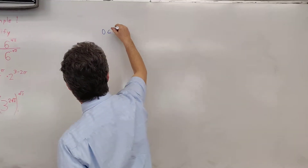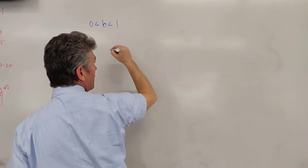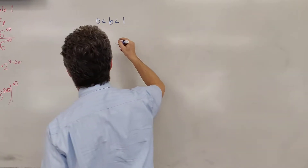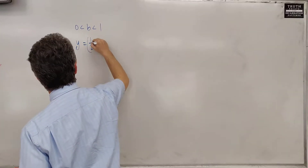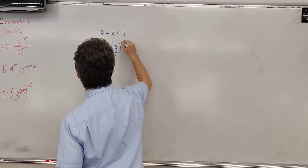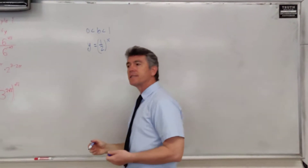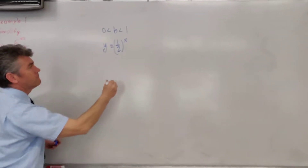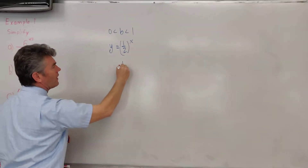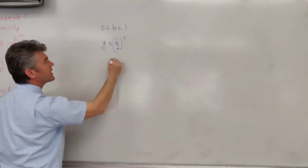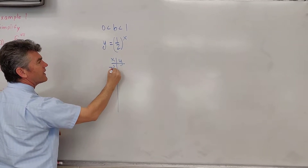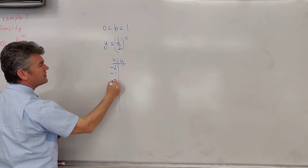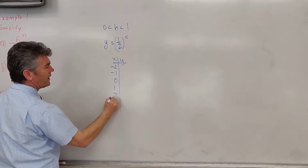If b is between 0 and 1, let's consider something like y equals one-half raised to the power of x and let's analyze this graph. As always, easy values: x and y with values negative 2, negative 1, 0, 1, and 2.